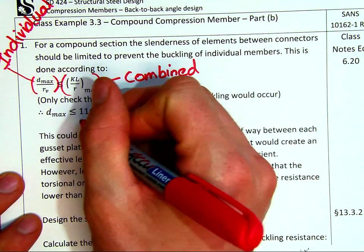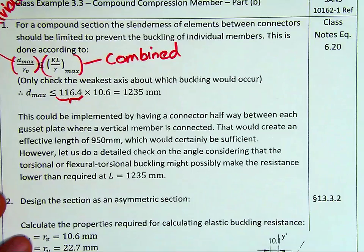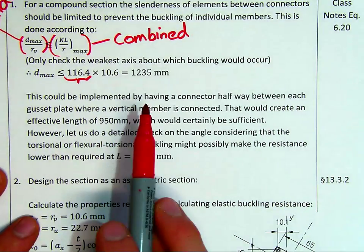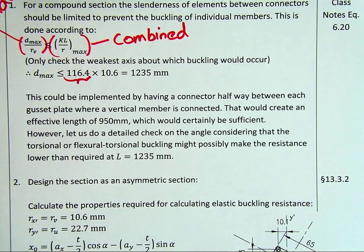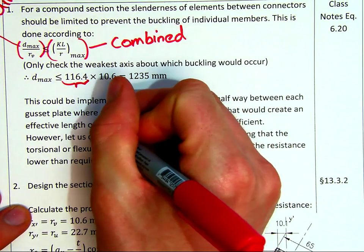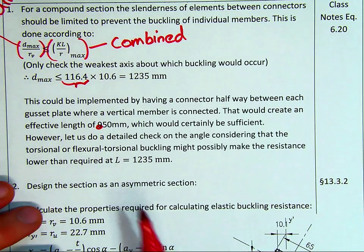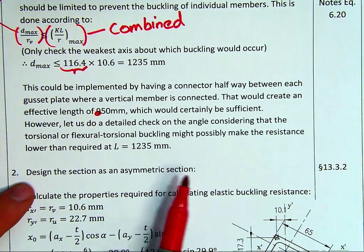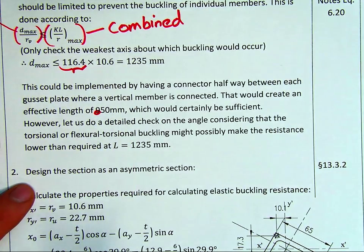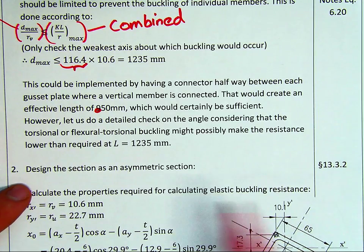So only check the weakest axis about which buckling will occur, so that our maximum spacing must be less than 1235 millimeters. This we determined in the last example. That's just the KL over r value. Now, this is quite easy to implement. This could be implemented by having a connector halfway between each gusset plate where a vertical member would create. This would create an effective length of 850mm, which would certainly be sufficient. However, let's do a detailed check. Let's say now we set this to be that 1235 millimeters long, and see what will happen, and see what capacity we will get, so that torsional or flexural torsional are considered. So let's design it as an asymmetric section.